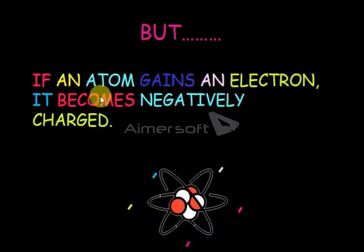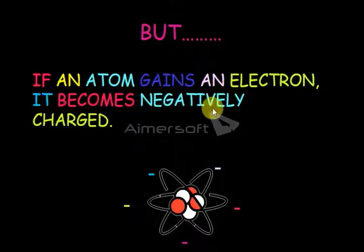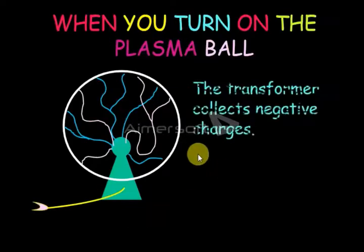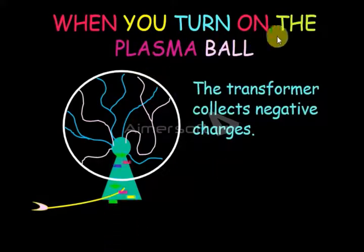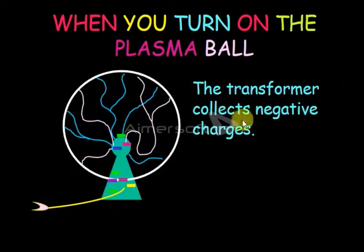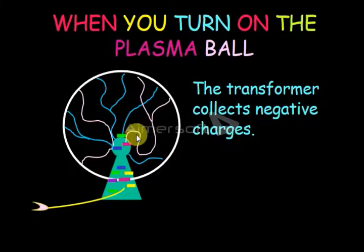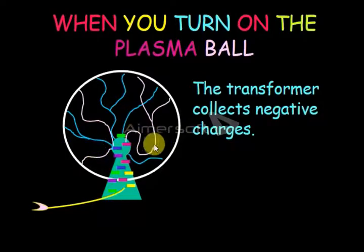But if an atom gains an electron, it becomes negatively charged — see, this is negativity. When you turn on the plasma ball, the transformer collects negative charges. You can see here, these collected negative charges are here.